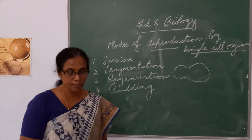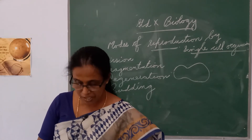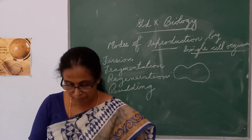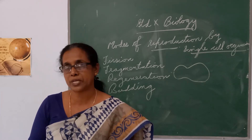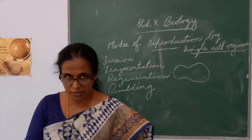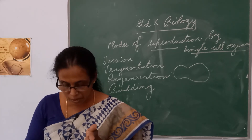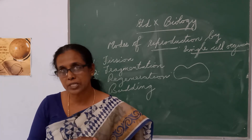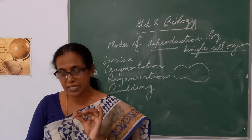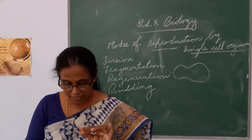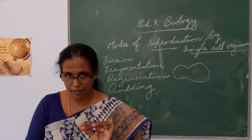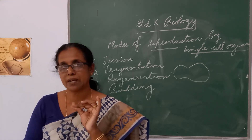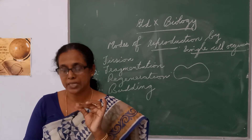The next type of reproduction is fragmentation. Fragmentation means — example: Spirogyra. The body splits up into small pieces upon maturation. When the body becomes matured it divides into small pieces, and these pieces or fragments grow into individuals. The body simply breaks up into small small pieces after maturation.